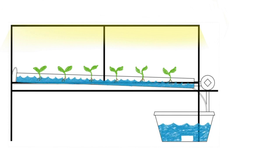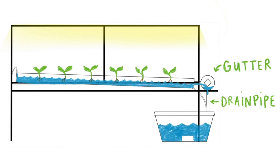You might be wondering, what happens to the water after it washes over the plant roots? That water flows into the gutter. The gutter has a hole in the middle to connect it to a drain pipe. The drain pipe allows the water to flow back into the reservoir.